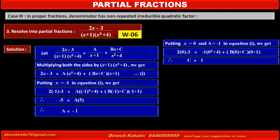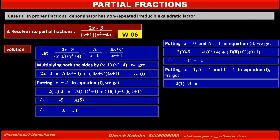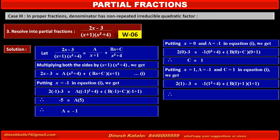To find the value of B, put x equal to 1, A equal to minus 1, and C equal to 0 in equation 1. The left-hand side gives 2(1) minus 3 equals minus 1. The right-hand side: minus 1(1 squared plus 4) plus (B(1) plus 0)(1 plus 1). Solving, we get B equal to 1.